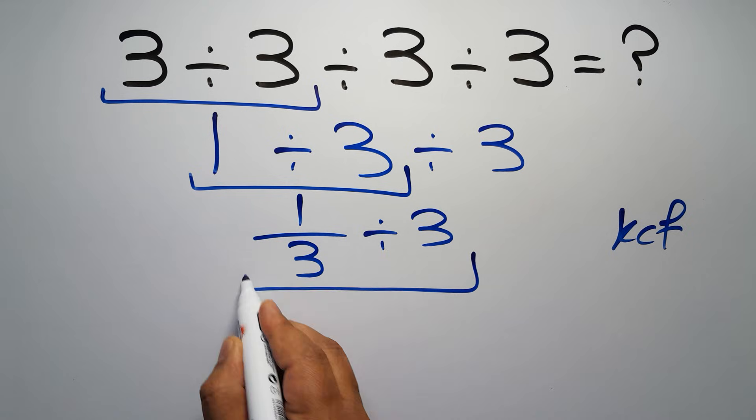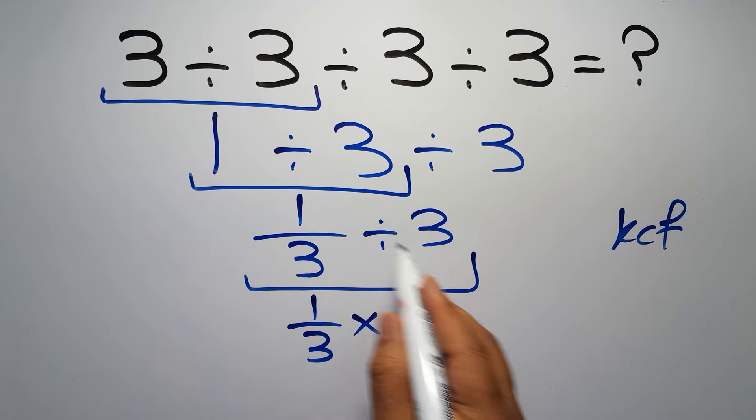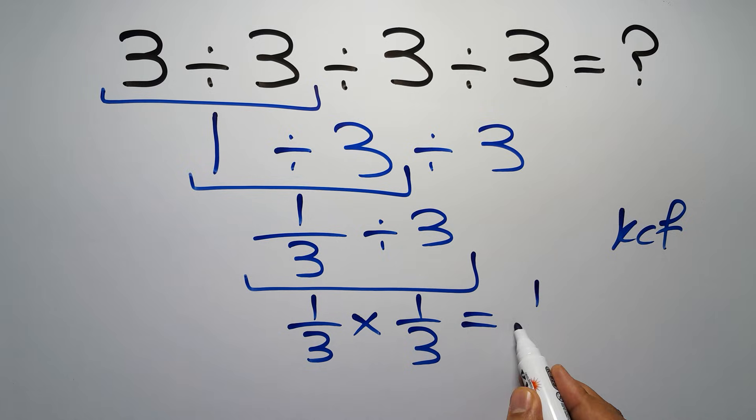We keep the first fraction, change the division to multiplication, and flip the second fraction. So we have 1 over 3 times 1 over 3, which equals 1 times 1, giving us 1.